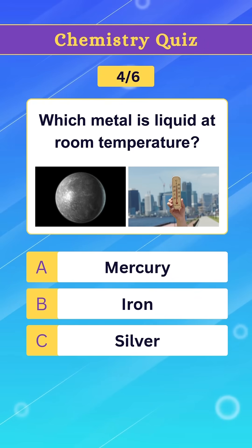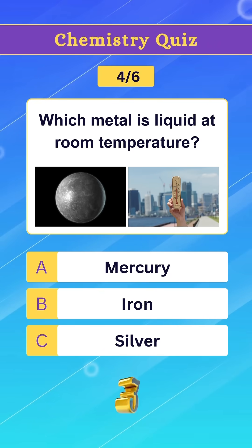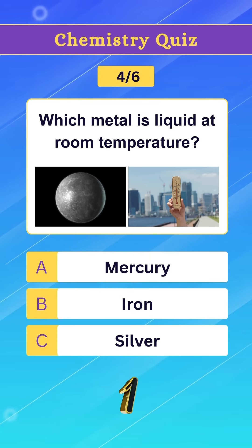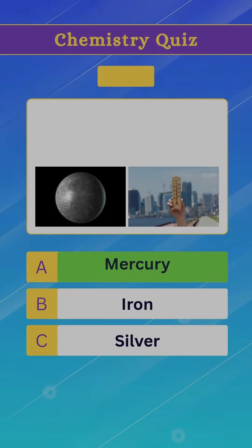Question 4. Which metal is liquid at room temperature? Option A. Mercury.